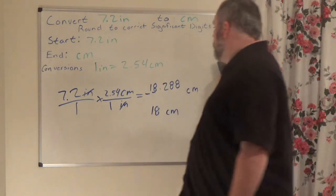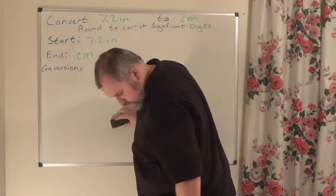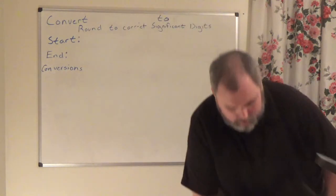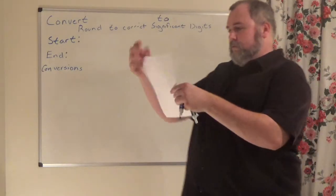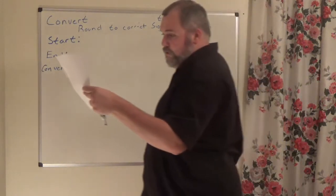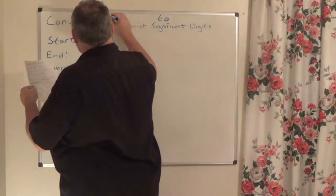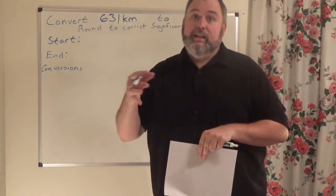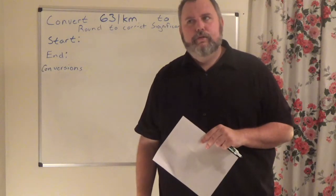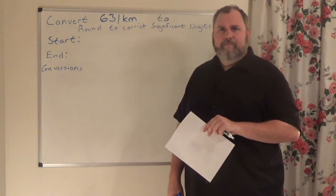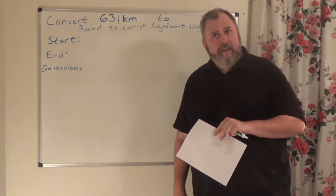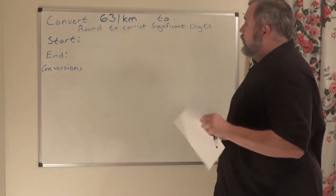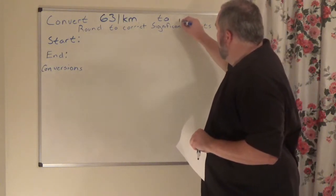Number 7 — the last problem in this section. Convert 631 kilometers to miles. KM can be pronounced kilometers or kilometres — depends on where you're from. I say kilometers.